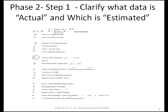The first step is to determine what data is actual and what is estimated. On your data input sheets, circle the estimated items after categorizing each item as either E for estimated or A for actual.